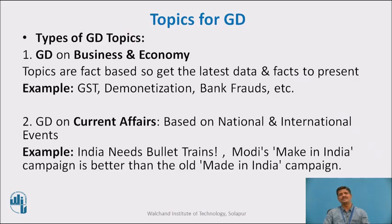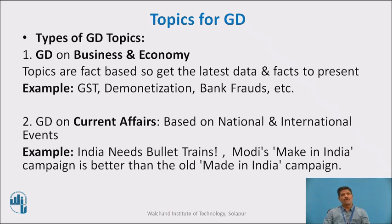Topics for GD: There are four types of GD topics. The first category is GD on business and economy — topics are fact-based, so get the latest data and facts to present. Examples include GST, demonetization, bank frauds, etc.